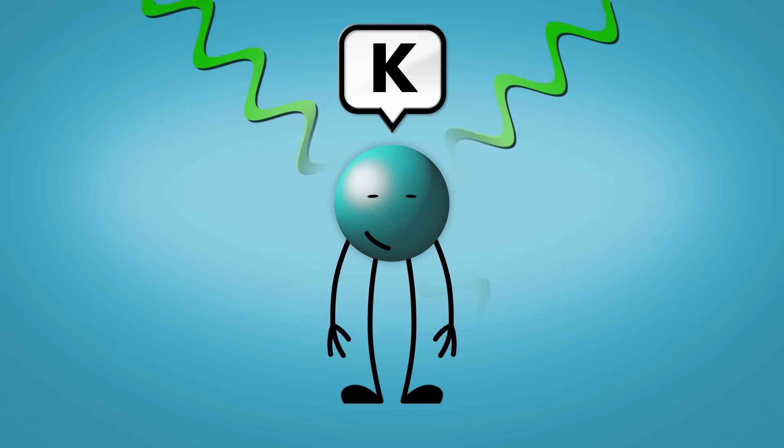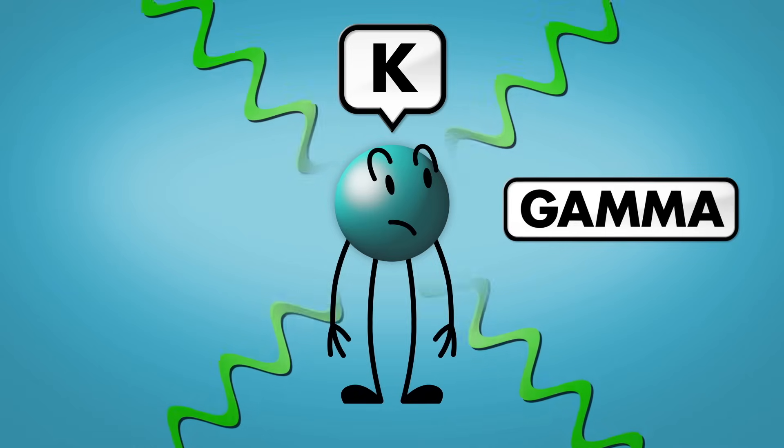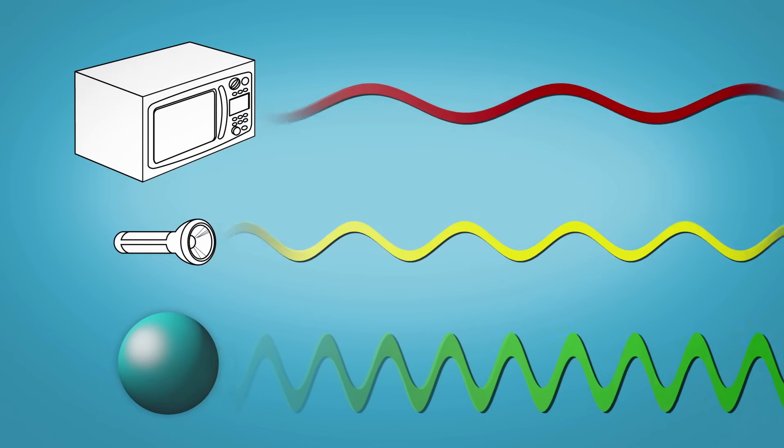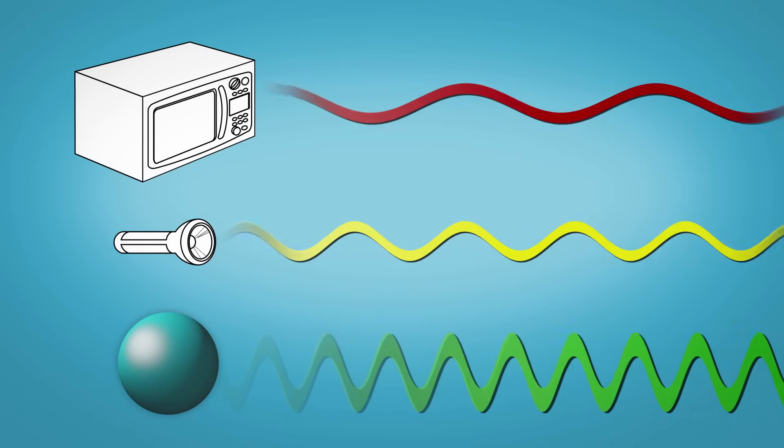There is a third type of nuclear radiation, gamma, which is not a particle at all. It is an electromagnetic wave, like microwaves or light, but it is actually a thousand times more energetic than visible light.